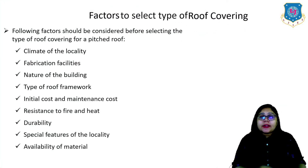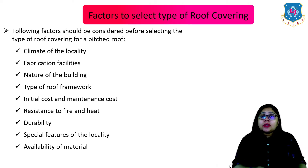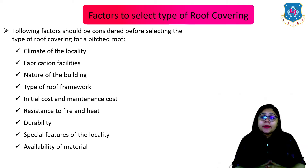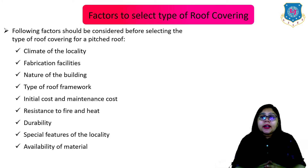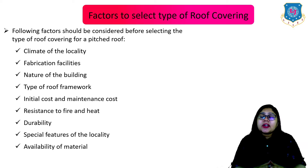So let us start with today's lecture where we first see which are the factors affecting the selection of different types of roof cover. Following factors should be considered before selecting the type of roof covering for a pitched roof particularly: the climate of the locality, fabrication facilities, nature of the building, type of roof framework, initial cost and maintenance cost, resistance to fire and heat, durability, special features of the locality, and the availability of material.